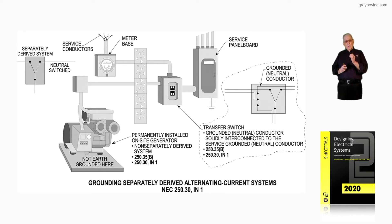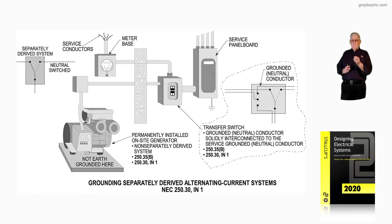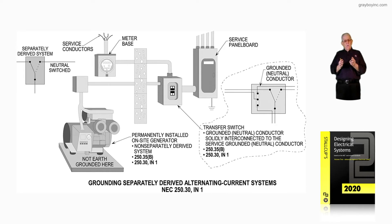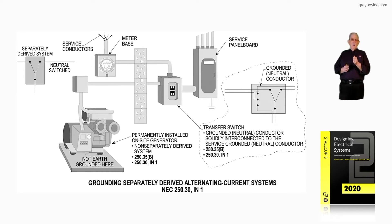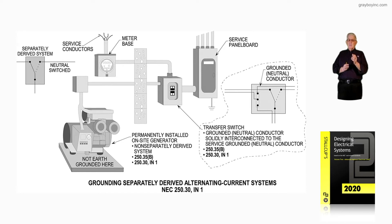If you want to know what type of generator you have, it's either a portable generator in accordance with 250.34A, where you would ground all the equipment grounds of your receptacles to the frame of the generator, or you'd go to 700.2. If the loads present are listed in 700.2 in that informational note, then you could classify it as an emergency generator, and all the wiring would comply with Article 700.